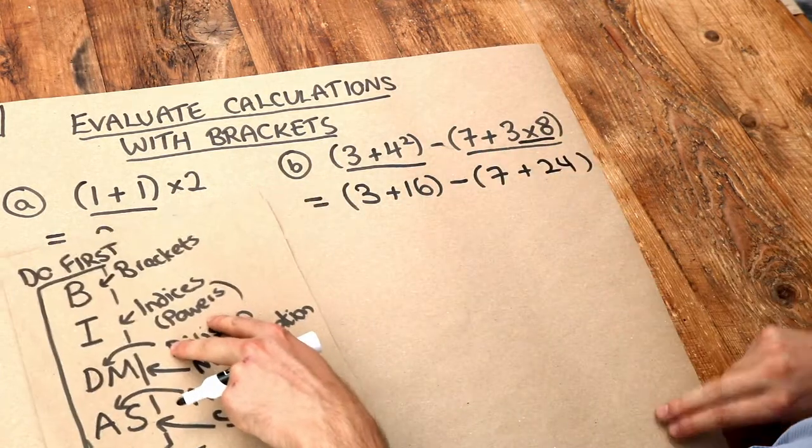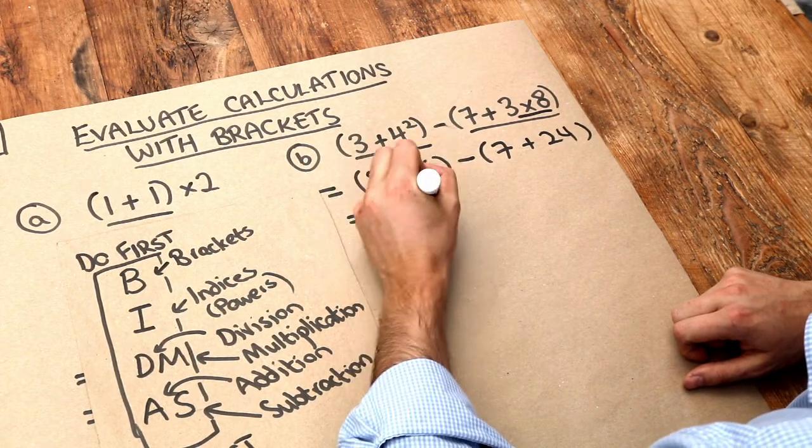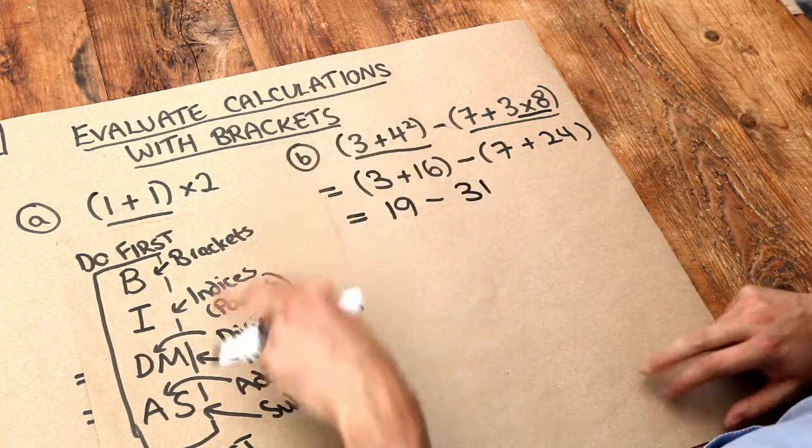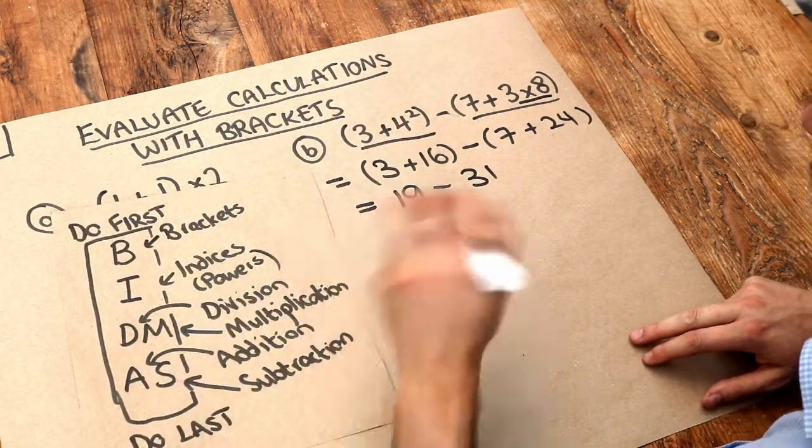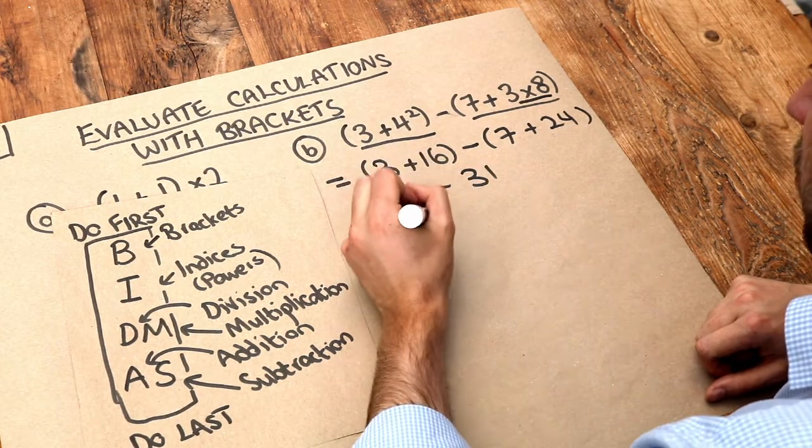Now we've still got these brackets, so I still need to do my brackets first. So 3 plus 16 is 19. 7 plus 24 is 31. And now finally, all I've got left is the subtraction, so I can do 19 minus 31, which is equal to 12.